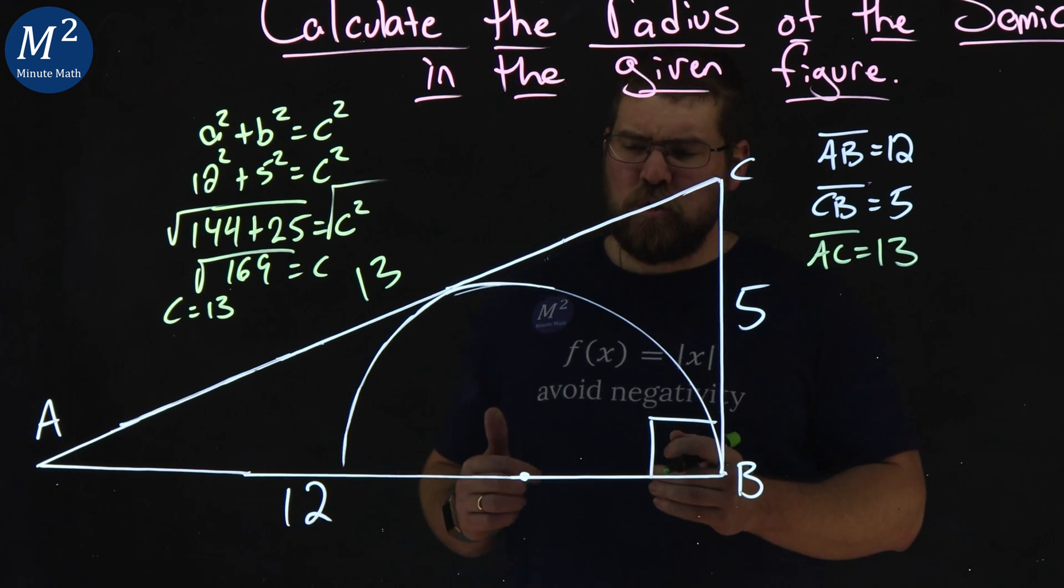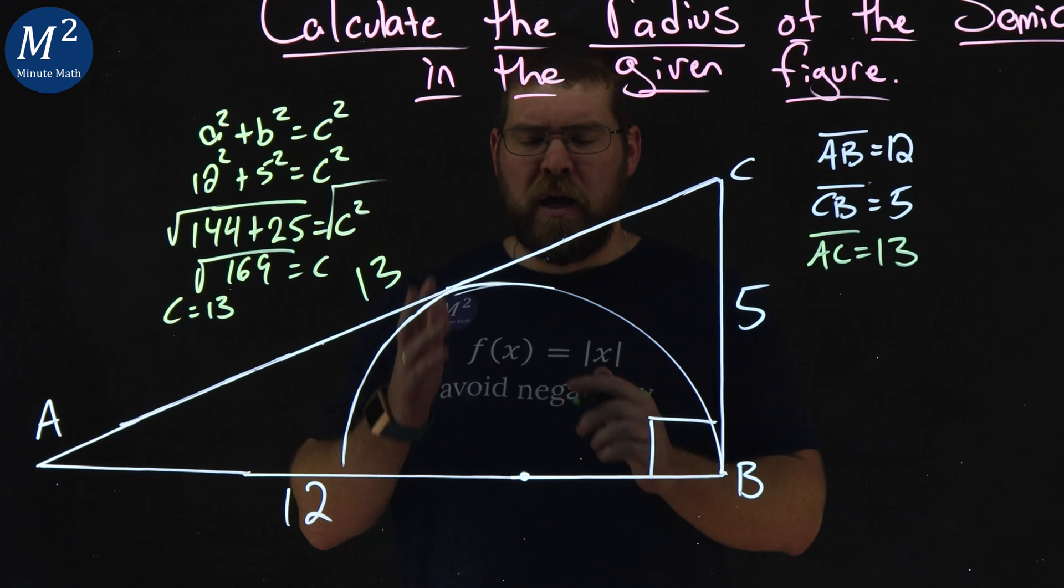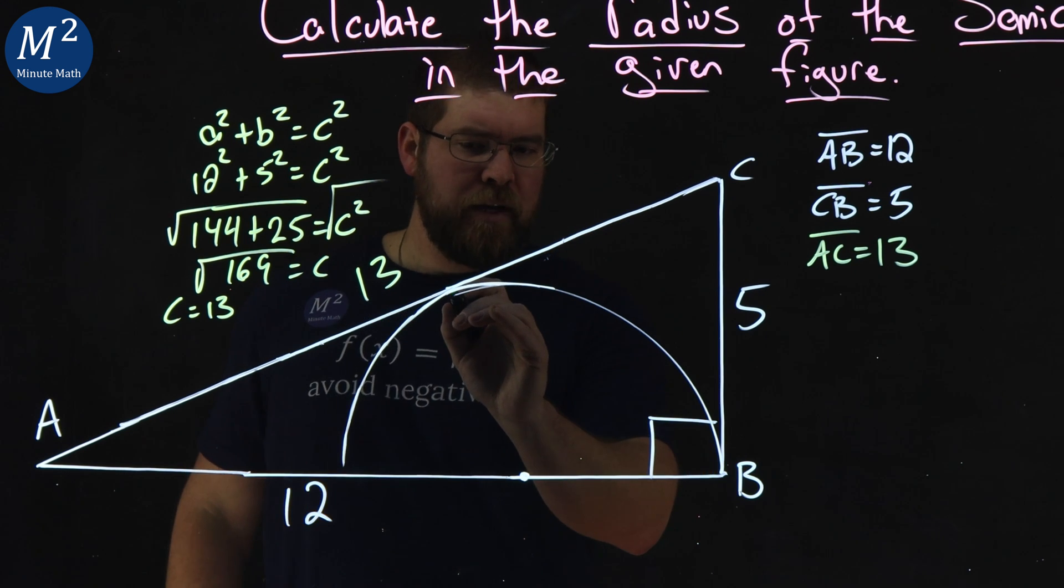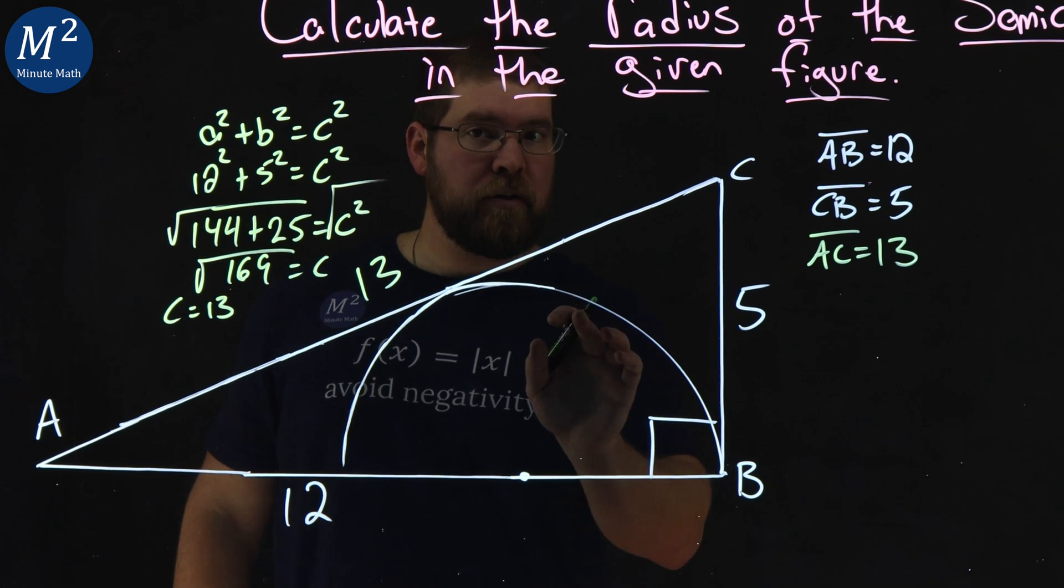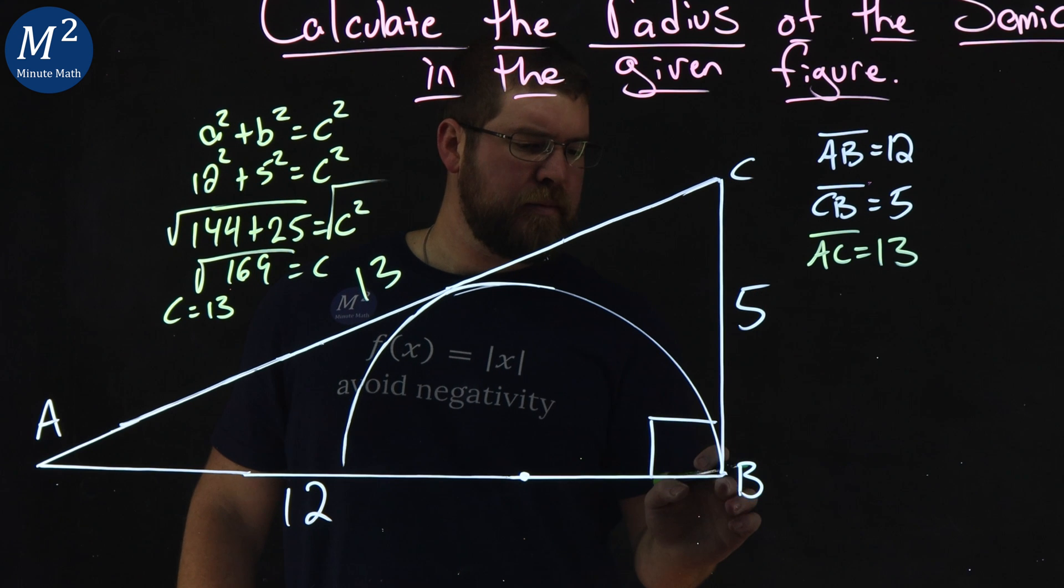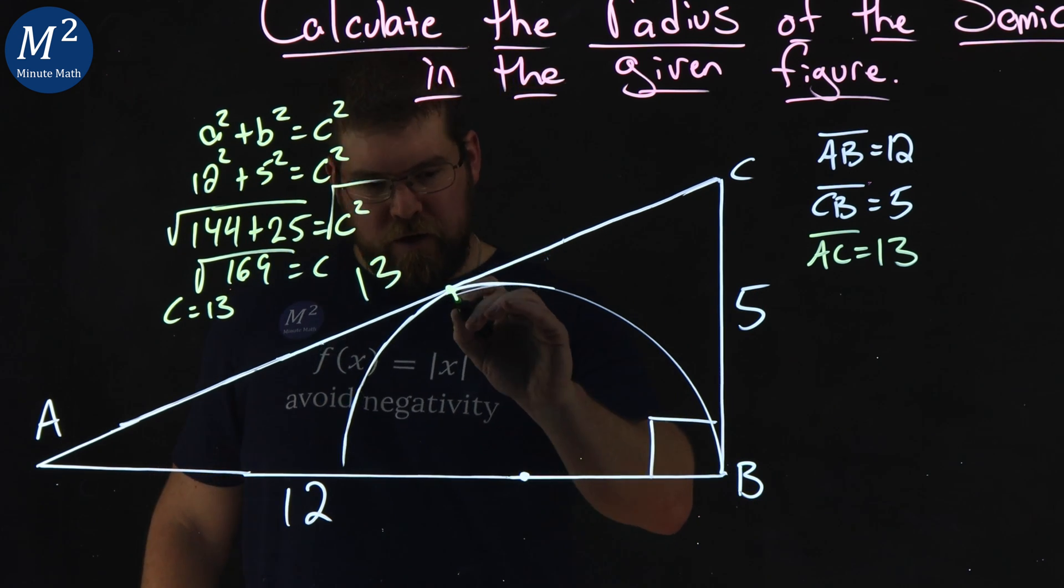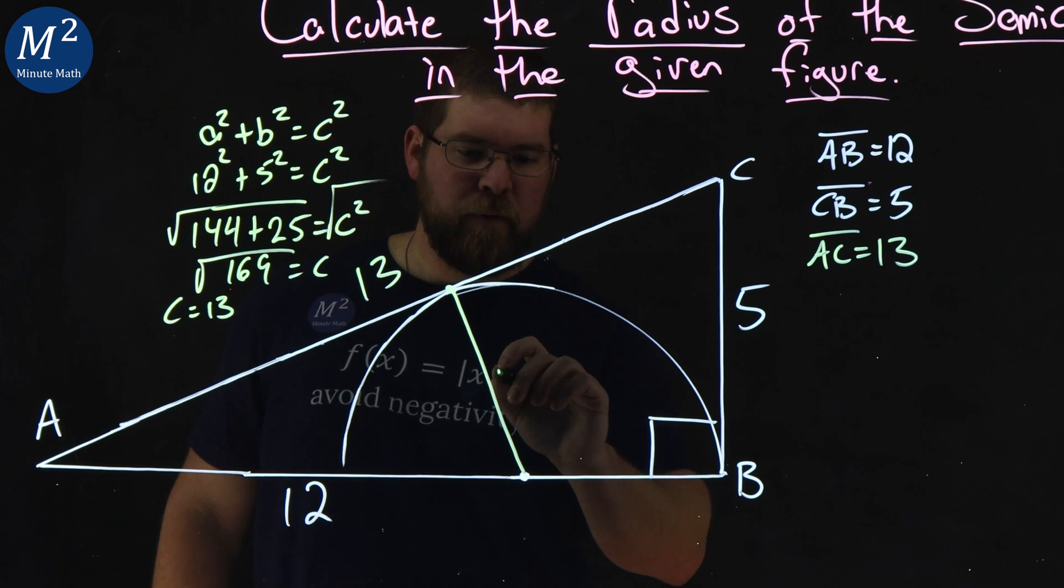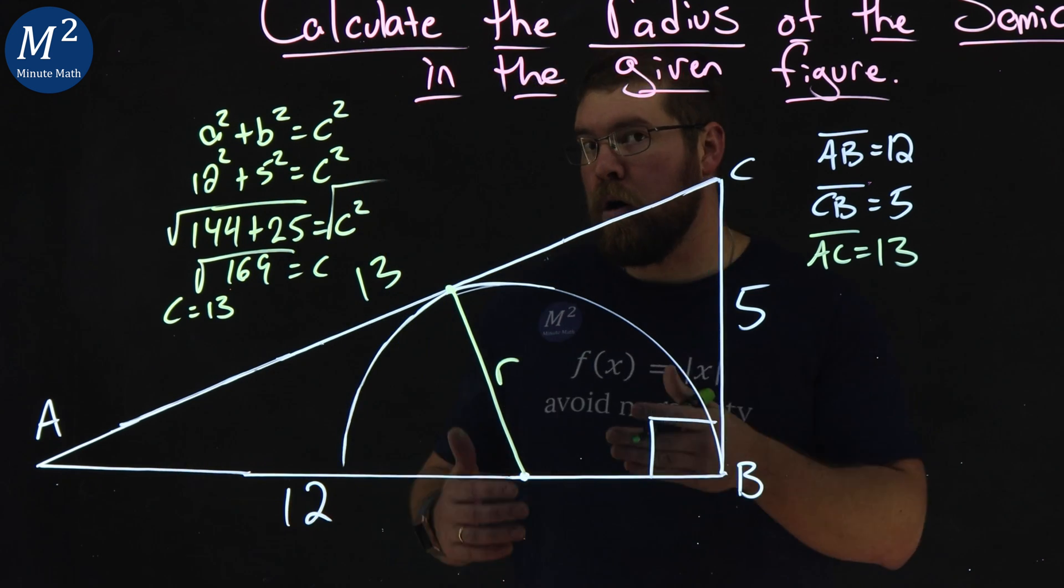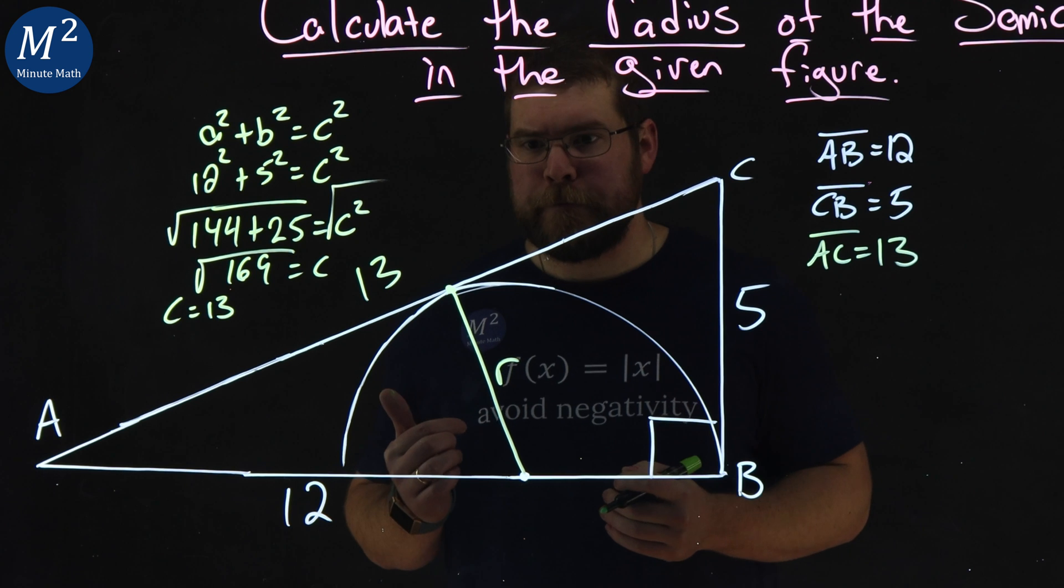Now, I want to draw a radius here. We notice we have a tangent right here. AC is a tangent to the semicircle, and so is CB, tangent. So, right here at this point, let's connect this line. If I can draw a straight line, good enough, and let's call it R, R radius.